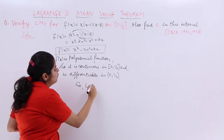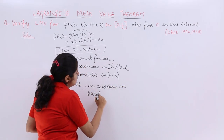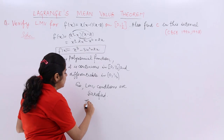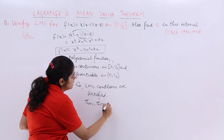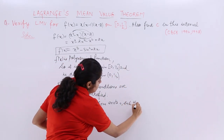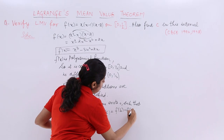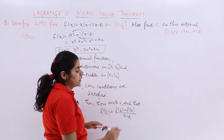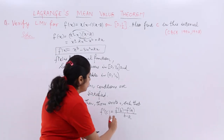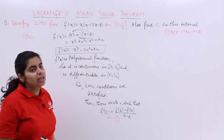According to LMV, Lagrange's Mean Value Theorem, only two conditions need to be checked: continuity and differentiability. Both are satisfied, so the conditions of Lagrange's Mean Value Theorem are satisfied. Therefore, there exists a C such that F'(C) = [F(b) - F(a)] / (b - a). This is equation (1). Our task now is to find F'(C) and the values F(b) and F(a).